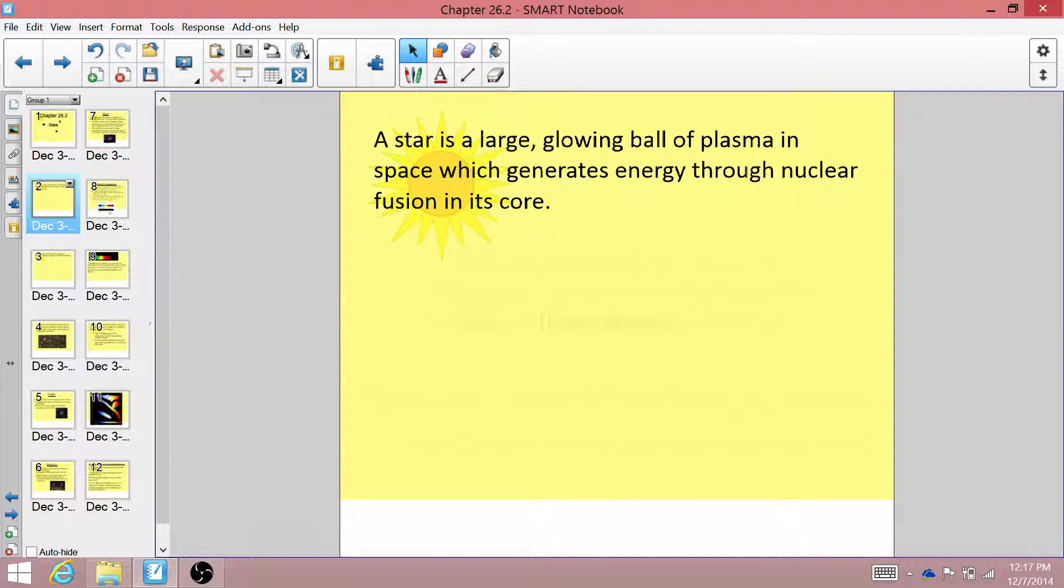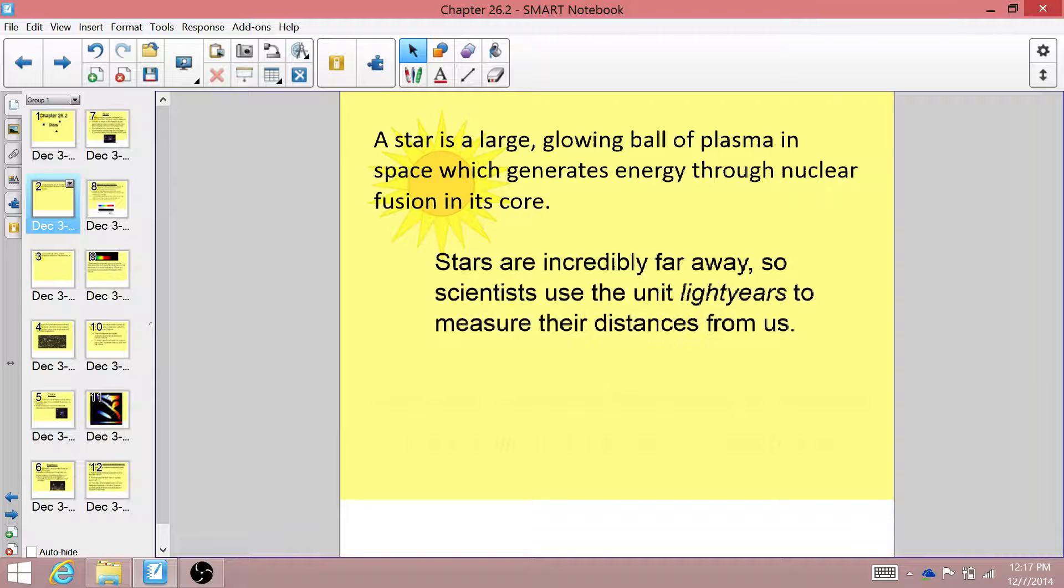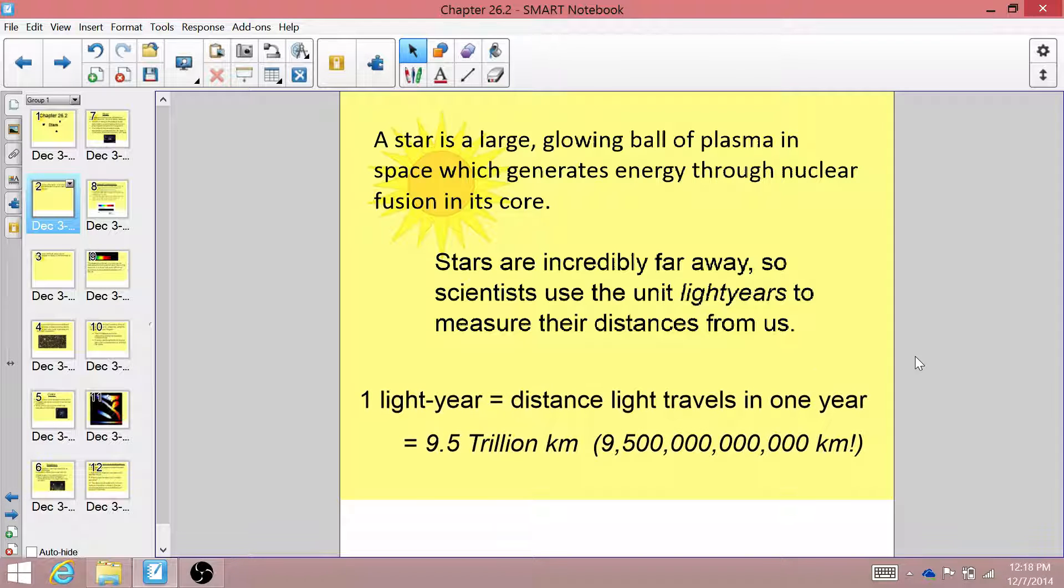But stars are incredibly far away, so we can't measure the distances between us and stars in meters or even kilometers. We have to use a unit called the light year. You've heard of the light year, but you probably don't fully understand just what it is. One light year is the distance light travels in one year through the vacuum of space.